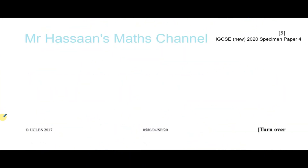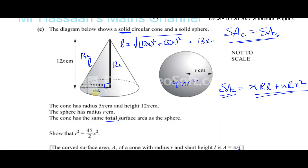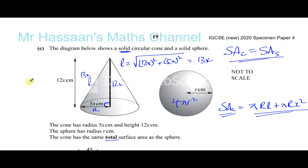The important things to remember: the slant height is found using Pythagoras with the radius and vertical height; and because it's a solid circular cone, the total surface area includes both the curved part πrl and the circular base πr². That completes question 10. The playlist for this paper and for areas and volumes will appear on screen, along with a link to paper 2 solutions. Thank you for watching.